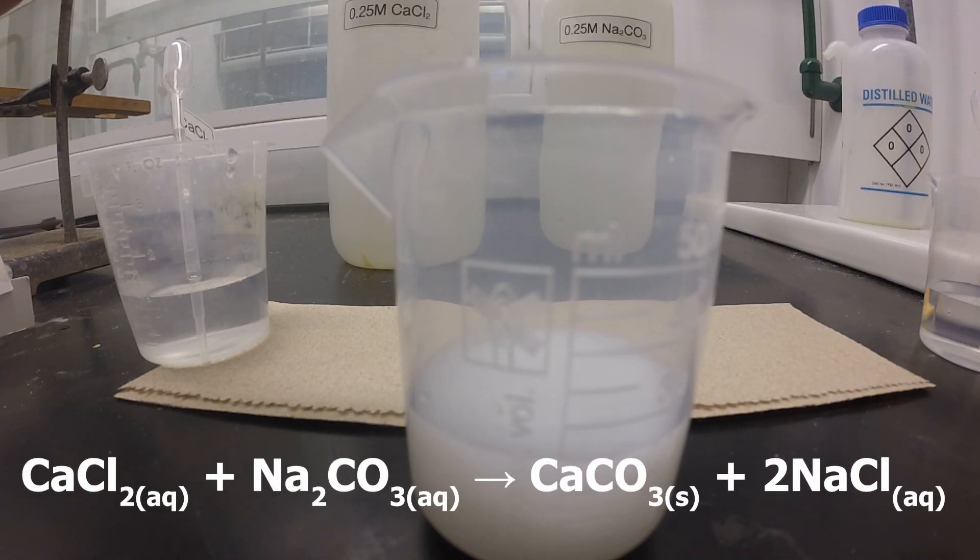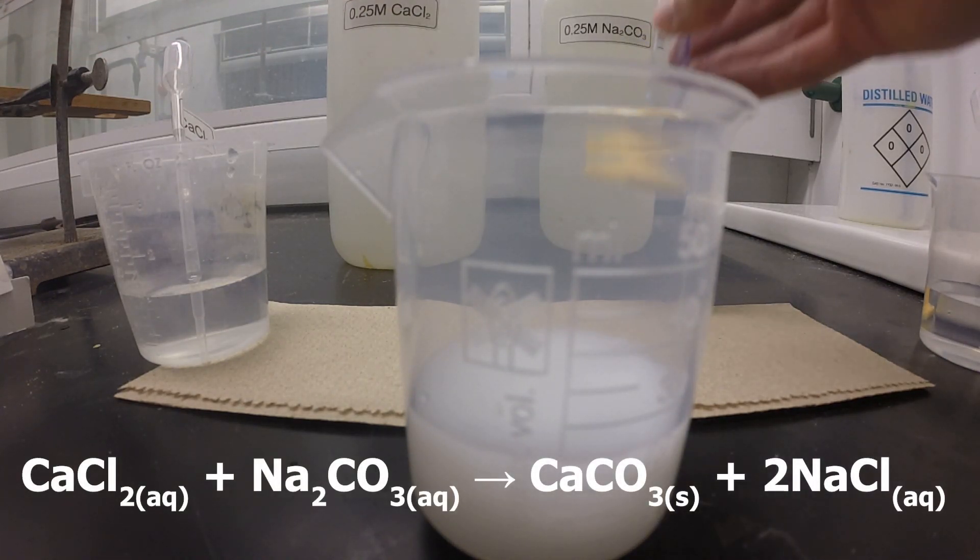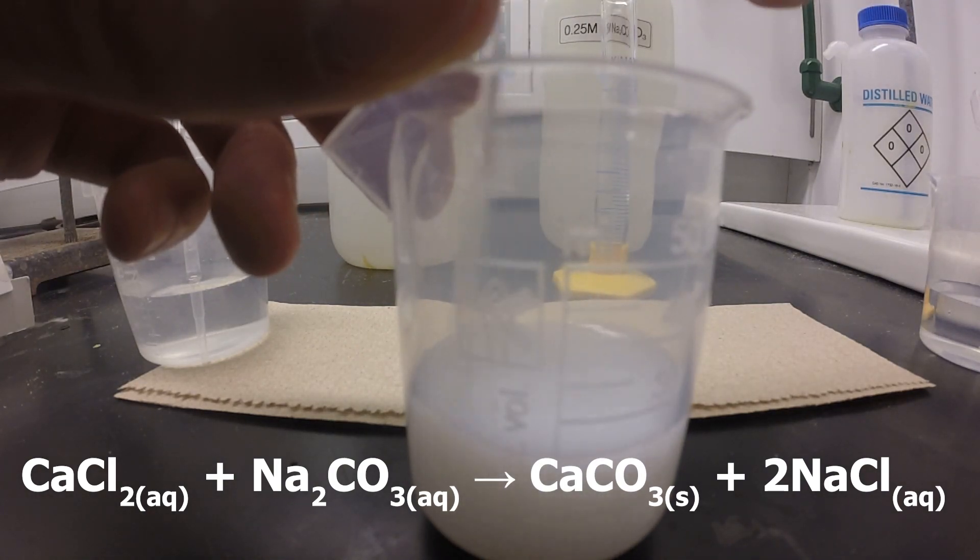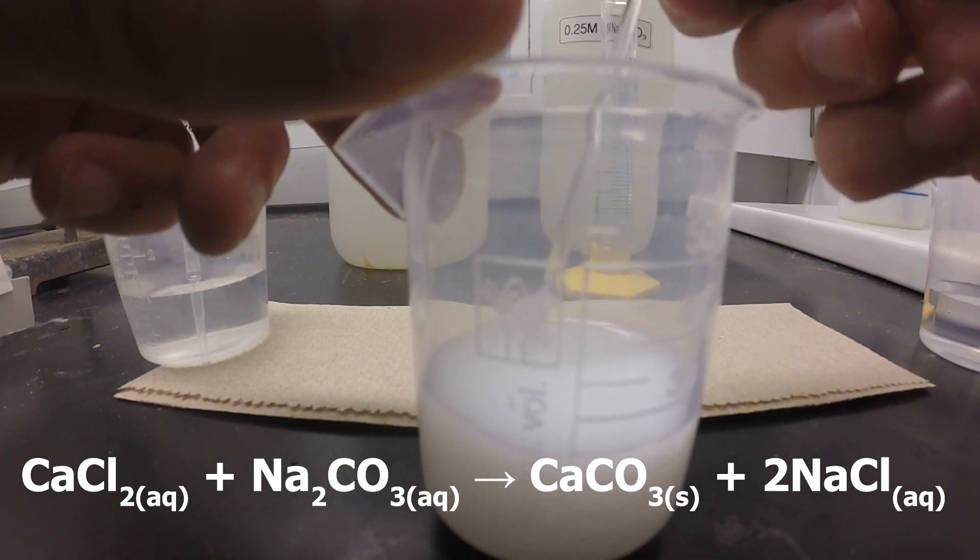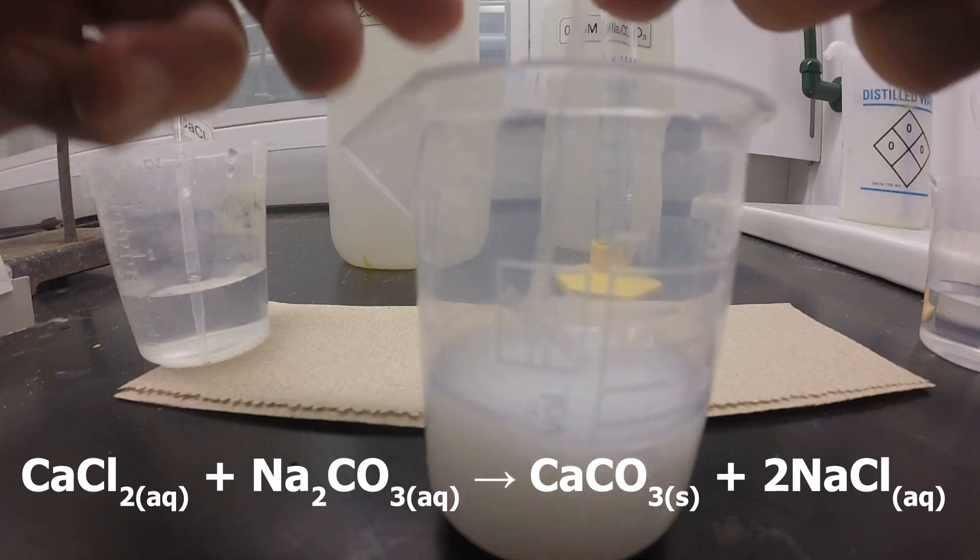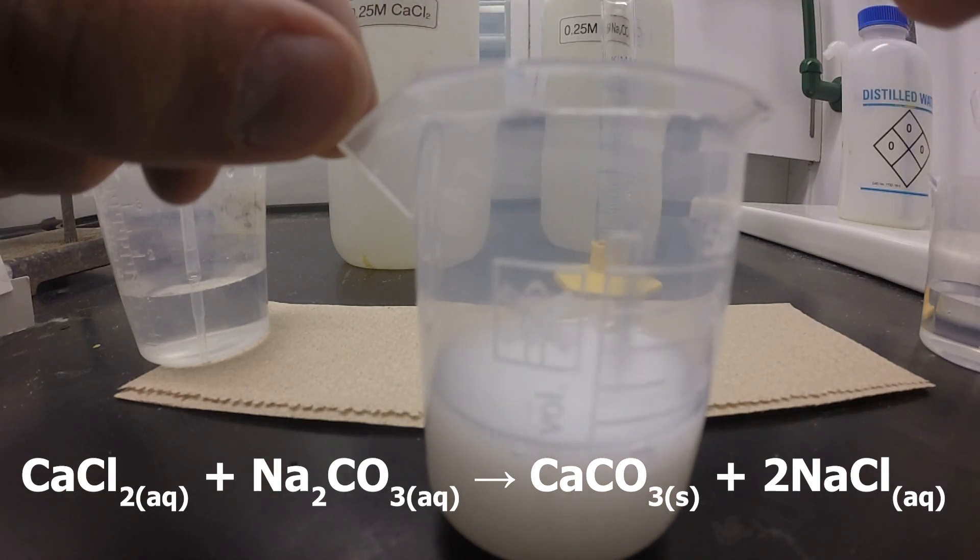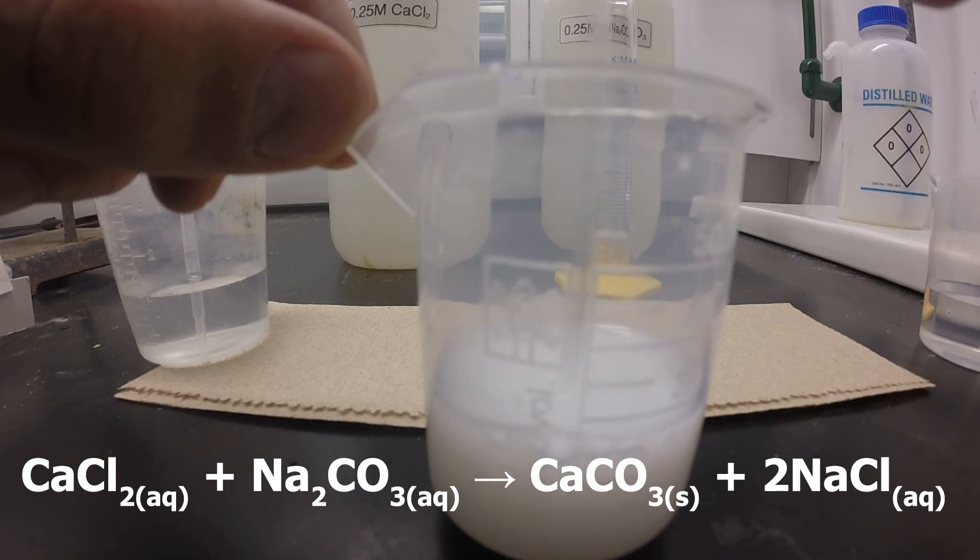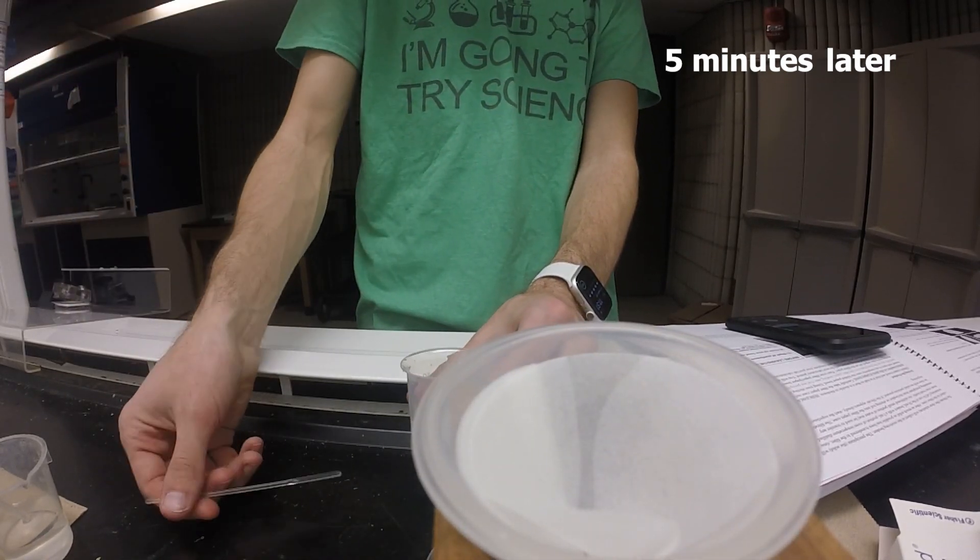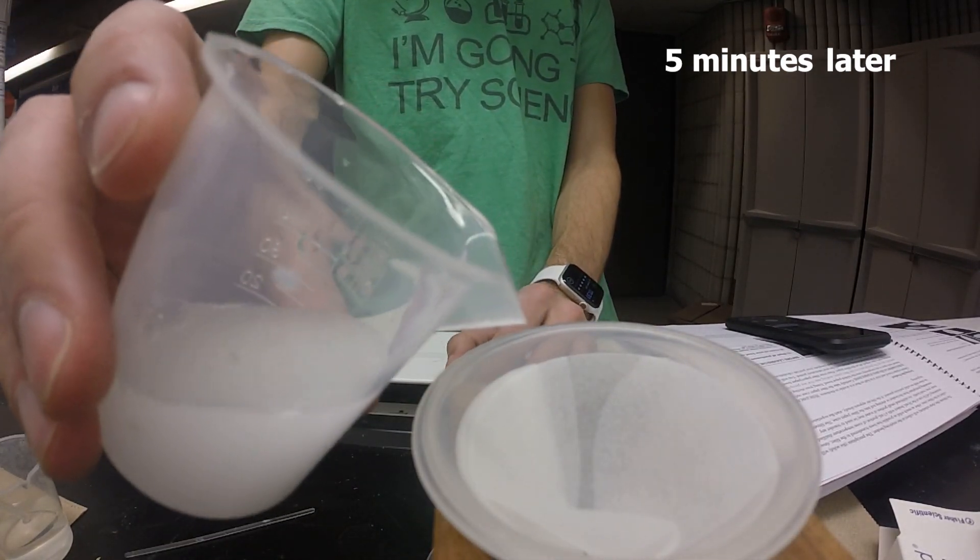You can see almost immediately we have a reaction, which you can see now below. As a reminder, the calcium chloride reacted with the sodium carbonate. We formed calcium carbonate, which is a solid according to our solubility rules, and sodium chloride, which is aqueous according to our solubility rules. We're going to stir for about five minutes, or because of editing, real quick for you guys. Then we're going to pour it off onto our filter paper.